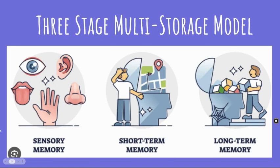In this video, we're going to talk about two different models. The first one is the three-stage multi-storage model, which was the original model created and for the longest time was the only model we had. In this model, it looks at this system as three different types of memory: sensory memory, which is for our five senses and where we originally get information in; short-term memory, which is the memory we're utilizing at the moment; and long-term memory, which is our storage of that information. We're going to talk through those three types in this three-stage multi-storage model.